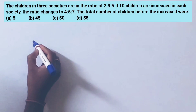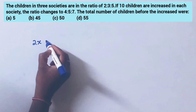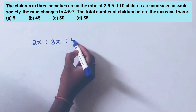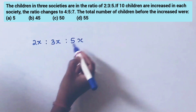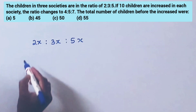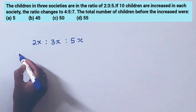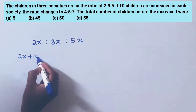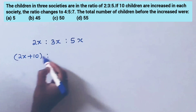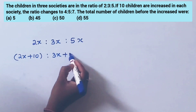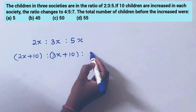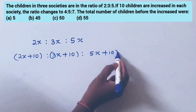The children in 3 societies are in the ratio of 2:3:5, meaning 2x to 3x to 5x. If 10 children are increased in each society, the new ratio becomes 2x+10 to 3x+10 to 5x+10.